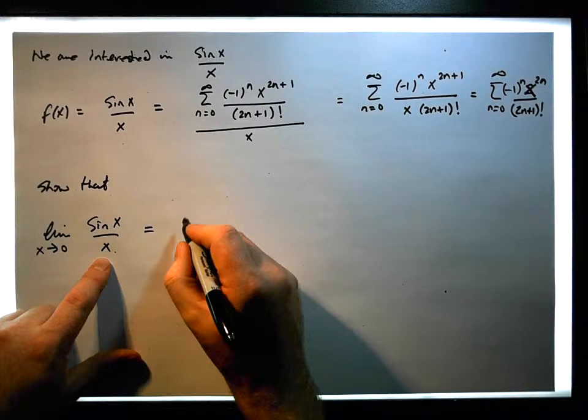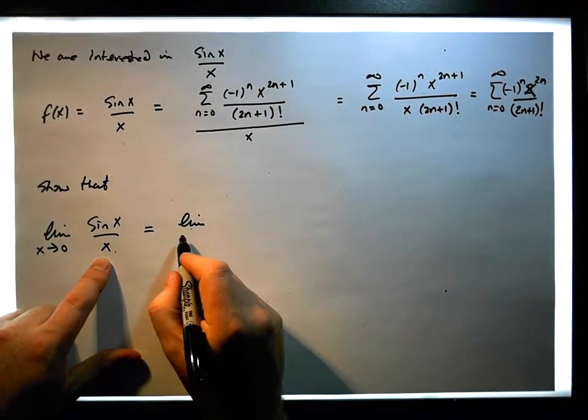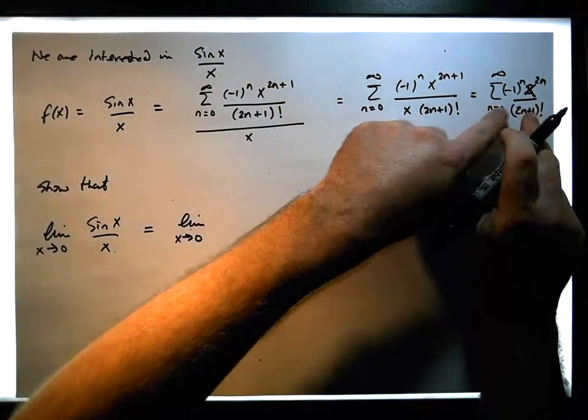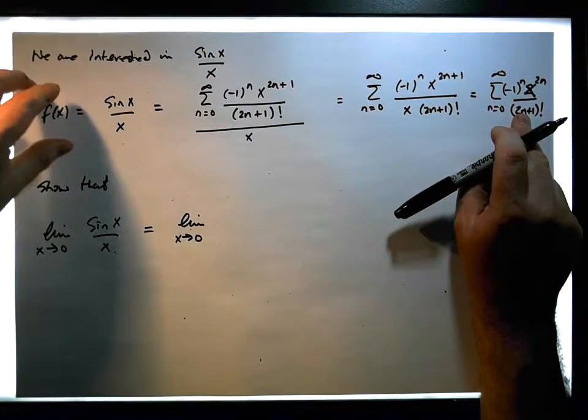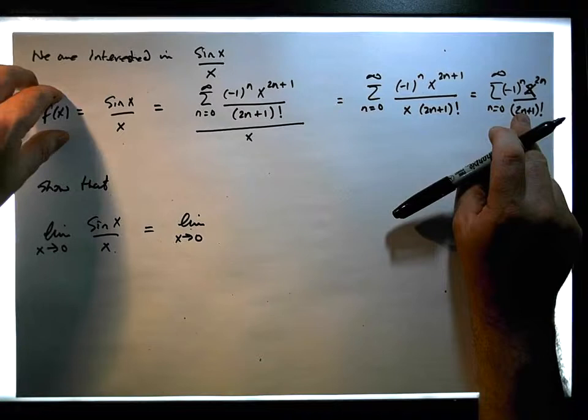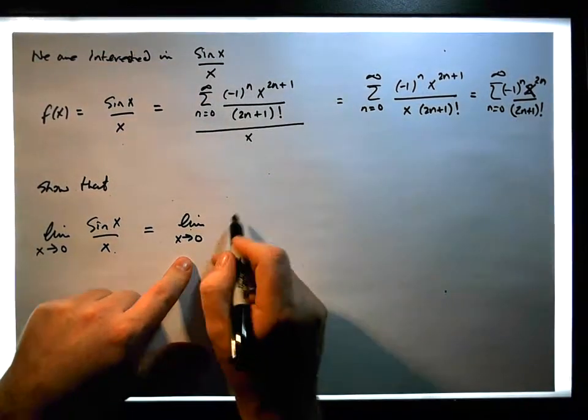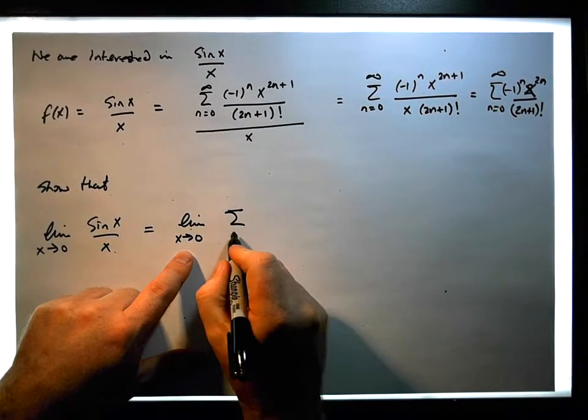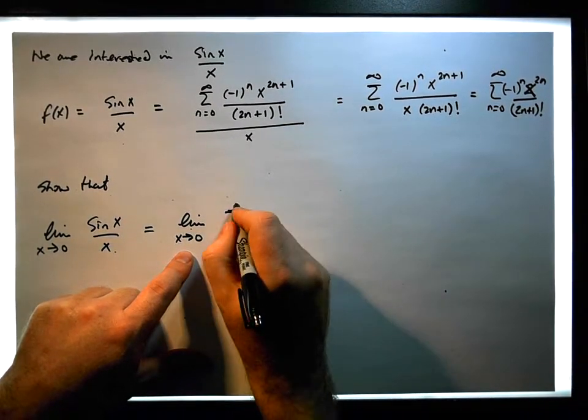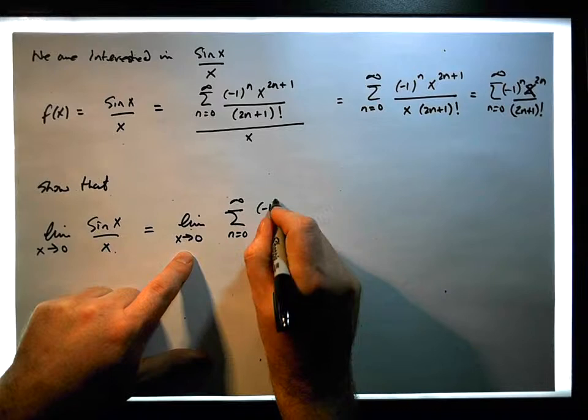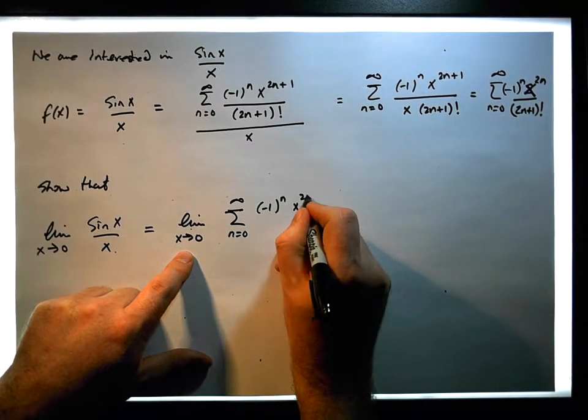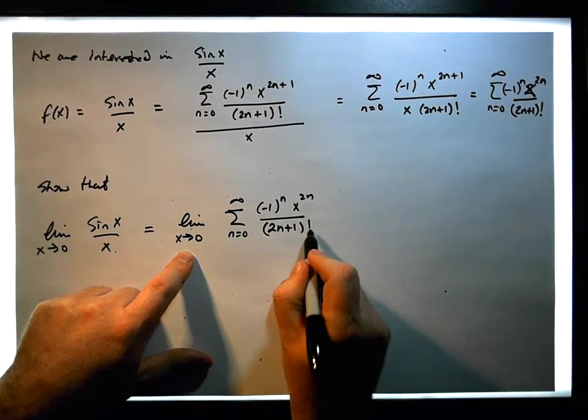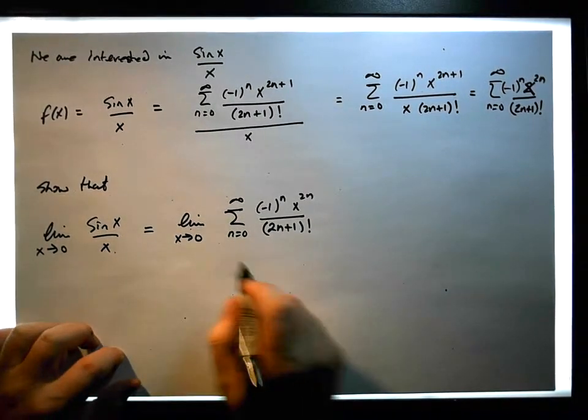But that's effectively the same as the limit as x tends to 0 of this particular Maclaurin series that represents the function f of x. So it's the same as the limit as x tends to 0 of this particular infinite summation from n equals 0 to infinity of minus 1 to the n times x to the 2n, all over 2n plus 1 factorial.